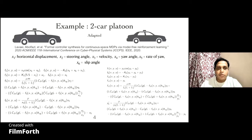This is an example of the nonlinear dynamics of a platoon of two cars. The state is 12-dimensional and encodes the horizontal displacement, steering angle, velocity, yaw angle, rate of change of yaw angle, and slip angle of both the cars. The vector field f is composed of trigonometric functions, polynomials, and inverse functions.